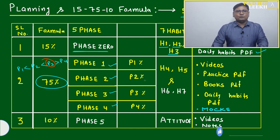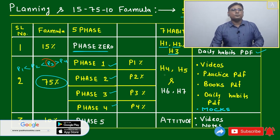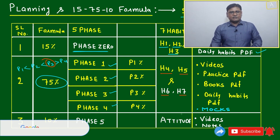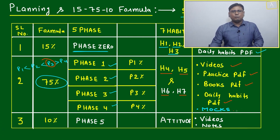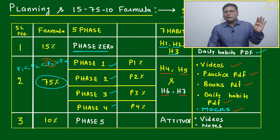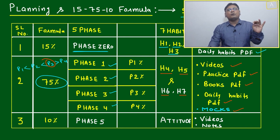During this, we have to develop habits number four, five, six, and seven: videos, practice PDFs, books in PDF form, daily habit PDF, mocks, sectional tests, evaluation. All these things we have to do—practice workshops, question banks, pattern workshops. All these we will do in the 75% phase.